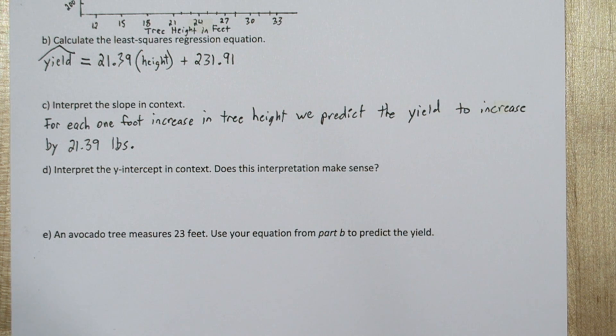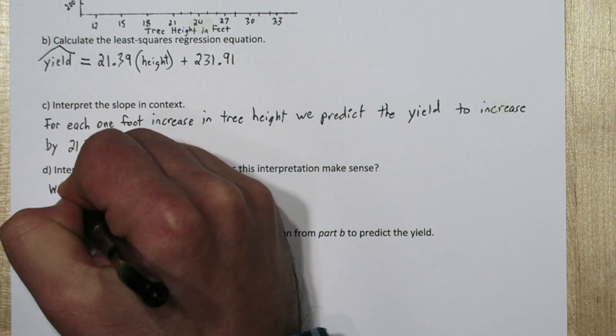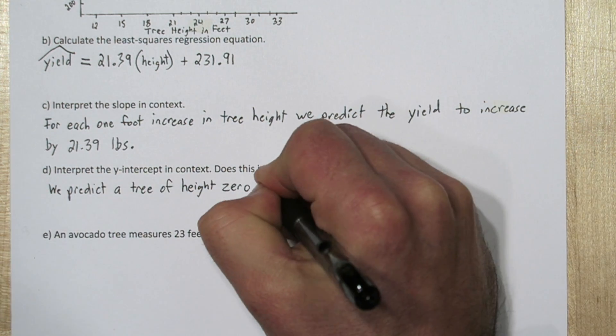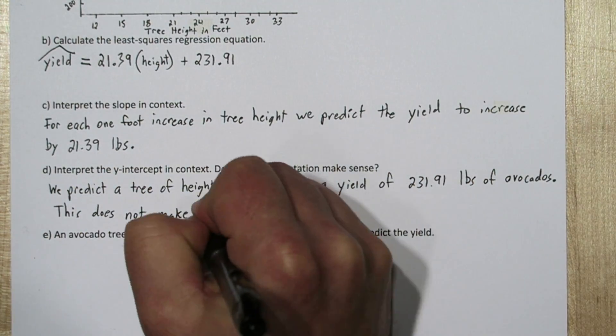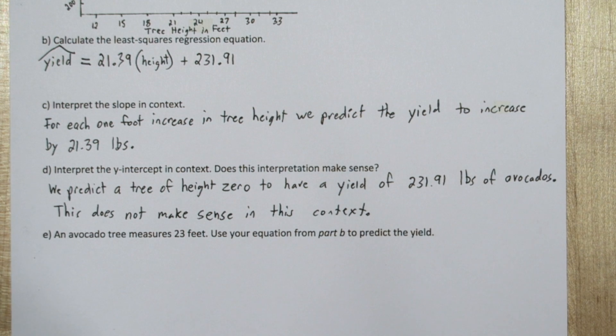We expect a tree of height zero, so a tree that doesn't exist, to not produce any avocados. So we'll say we predict a tree of height zero to have a yield of 231.91 pounds of avocados. This does not make sense in this context.